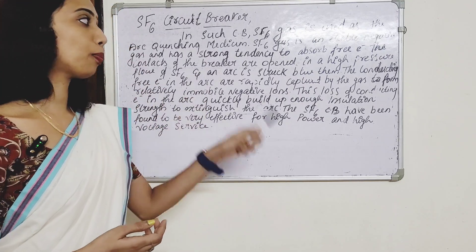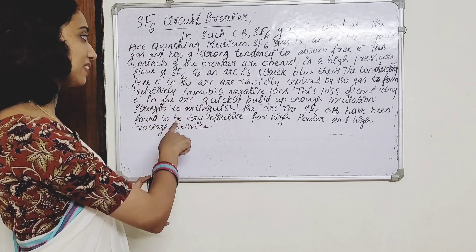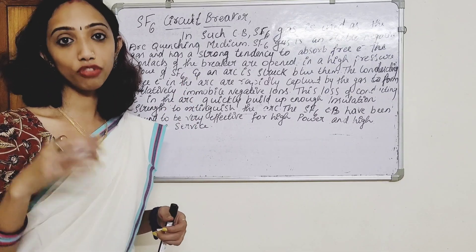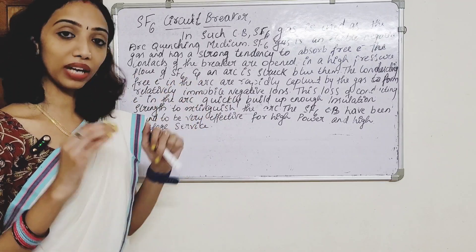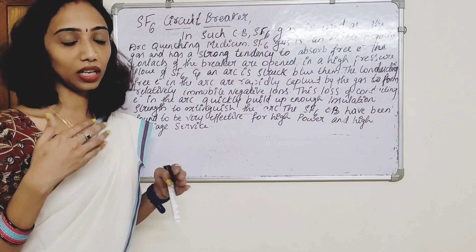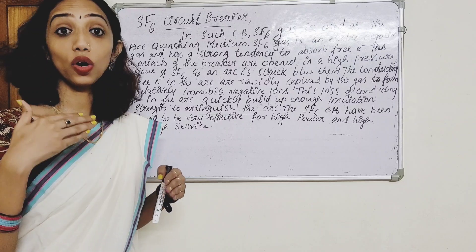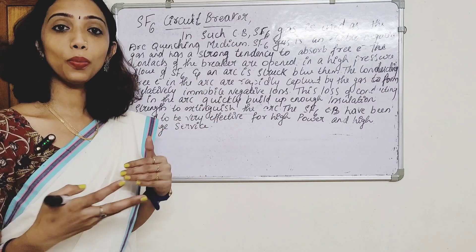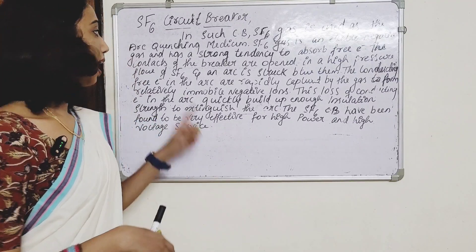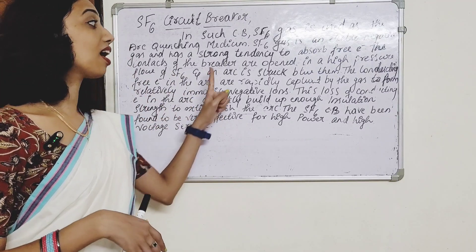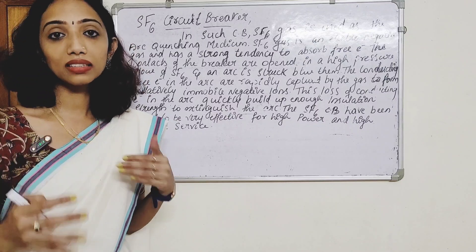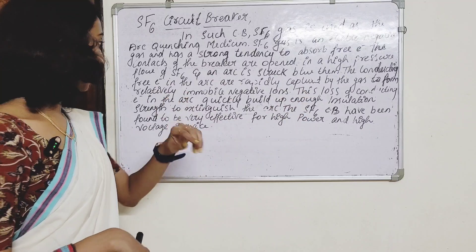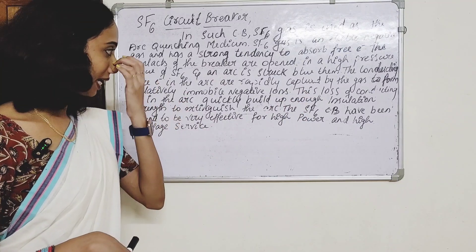The contacts of the breaker are opened in high pressure flow of SF6 gas, and an arc is struck between them. The SF6 gas flows at high pressure as the contacts open. The moving contact separates from the fixed contact, and the arc is struck between them. The free electrons in the arc are rapidly captured by the gas to form relatively immobile negative ions.